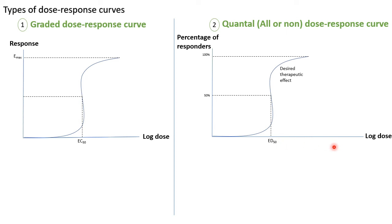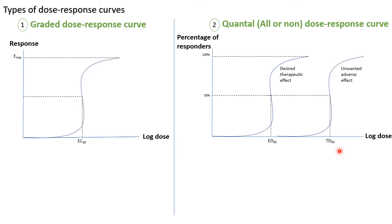We get another quantal or all-or-none dose-response curve, shifted to the right because we increased the dose. But now this curve is for the unwanted adverse effect — it measures how many animals died. If we extrapolate the 50% responders point to the x-axis of the log dose, we get the dose that causes half the population to die or experience this unwanted adverse effect. We call that dose TD50, the toxic dose 50, or median lethal dose.